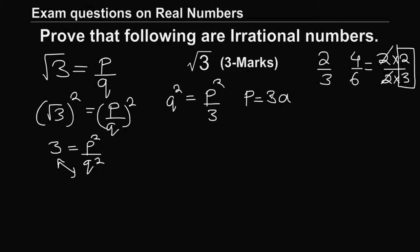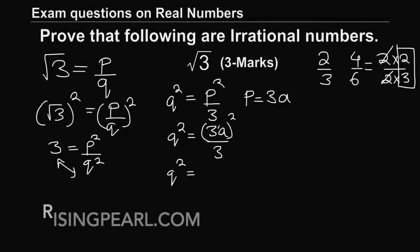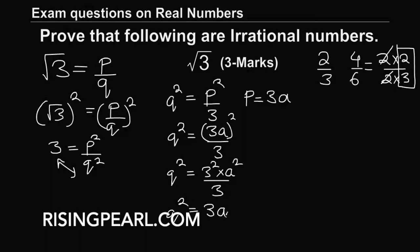We substitute P equals 3A into Q squared equals P squared by 3. This gives Q squared equals 3 squared times A squared divided by 3, and one of the 3's cancels out, leaving Q squared equals 3 times A squared.